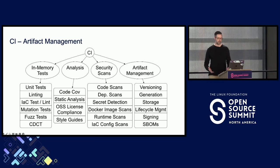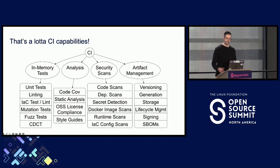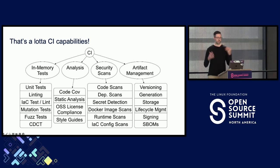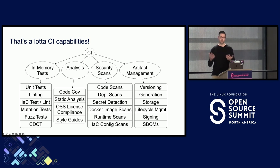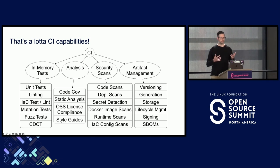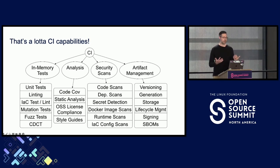And then finally we move on to artifact management: we determine the next version number, generate the artifact, store it somewhere, manage the lifecycle of it, sign it, and create a software bill of materials. This is a lot of CI capabilities. I have a version of this talk where I go in and break down all of these, but that takes an hour plus. The GraphViz diagram here is partly because I love GraphViz, but also it's meant to stress the whiteboarding nature of this — I'm skipping all the debate that went into getting to this breakdown.